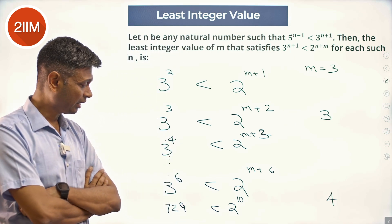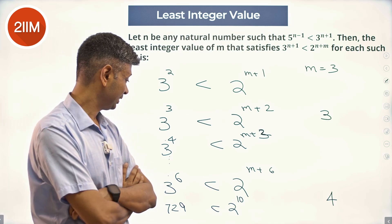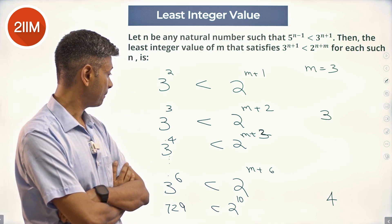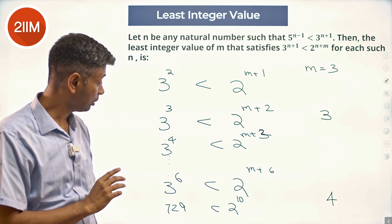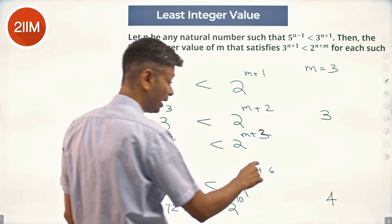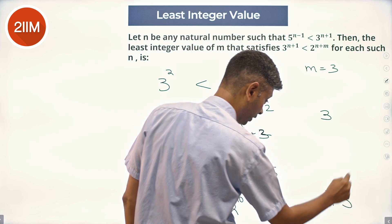So 3^6 is 729 < 2^10. This is n+m. Should be m+5, not 4. m is 5. Sorry about that.